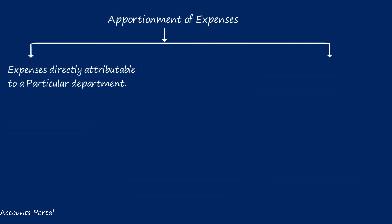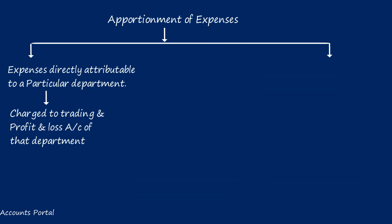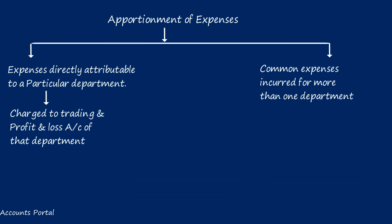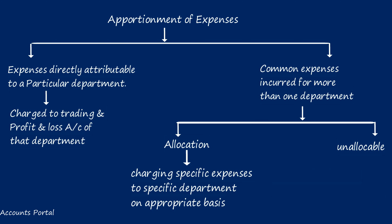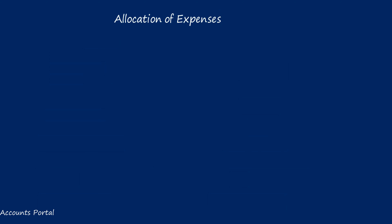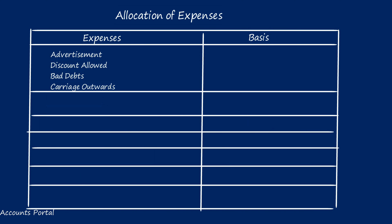The second unique topic is apportionment of common expenses to various departments. Expenses directly attributable to a particular department are debited to that department's account — for example, insurance charges on stock held by a specific department. For common expenses incurred for more than one department, there are two possibilities: allocable and unallocable. Allocable means when the benefits of an expense are shared by all departments but can be specifically allocated, they should be allocated on a suitable basis.